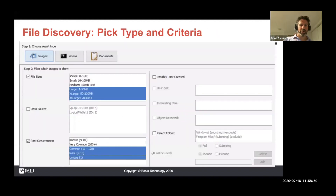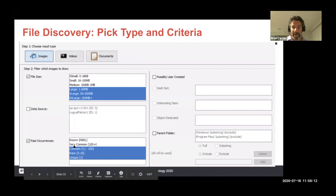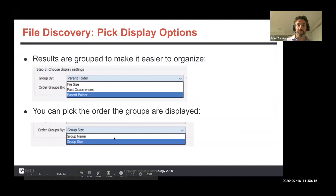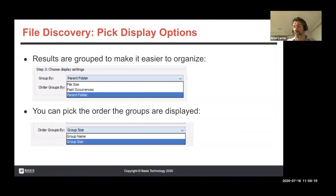The UI looks like this. You choose the type — right now we have three, with web artifacts coming next and executables after that. Step two is define the criteria: based on size, data sources, and past occurrences. Then you pick display options — how you want to group them. Instead of giving you a long list of thousands of files, we force you to choose how to group them: by size, by past occurrences, or by parent folder — all depending on your goals.